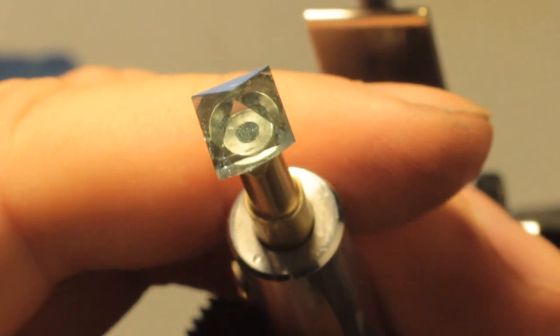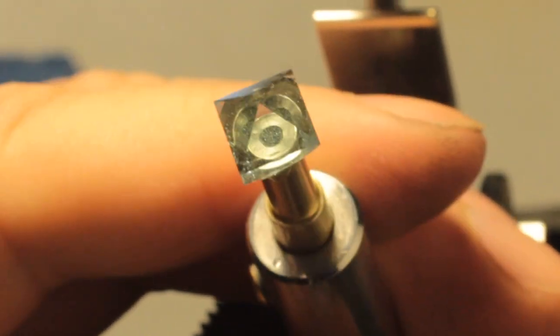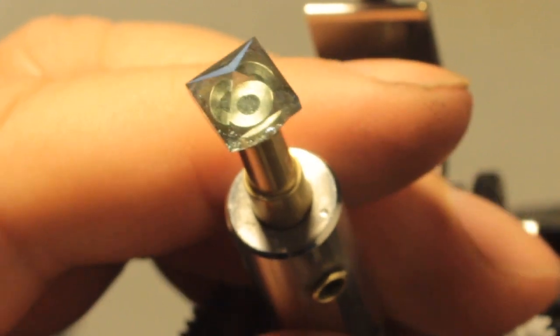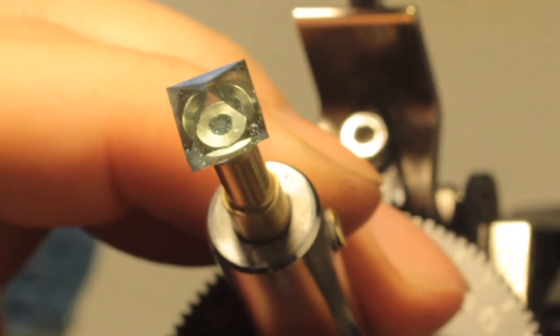I have finished polishing the bottom half, or pavilion, of our aquamarine. And now I will transfer the dop to cut the top half, or the crown of the stone.